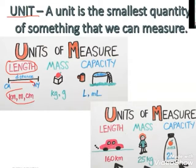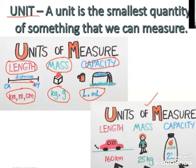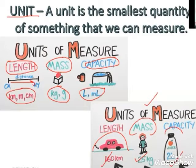The units for length will be kilometer, meter, and centimeter. Similarly, when we have to talk about how heavy an object is, we have the units kilogram and gram. When we have to know the capacity — how much milk is there in a mug — the units for liquid are liters and milliliters. You can see in the picture: how much distance a car has traveled, the weight of a child, and how much juice is in a bottle — all measured with standard units. That's why we call it the standard unit of measurement.